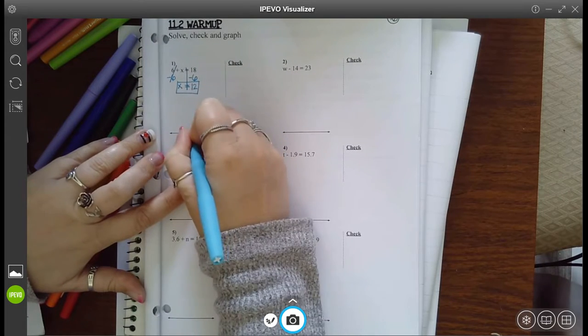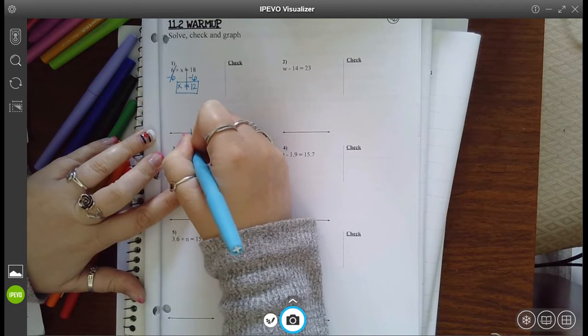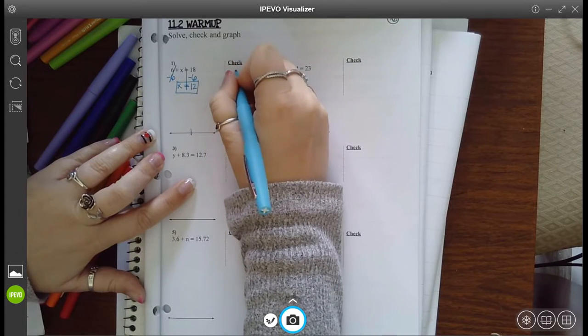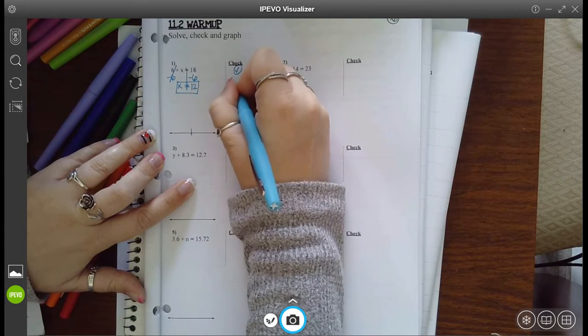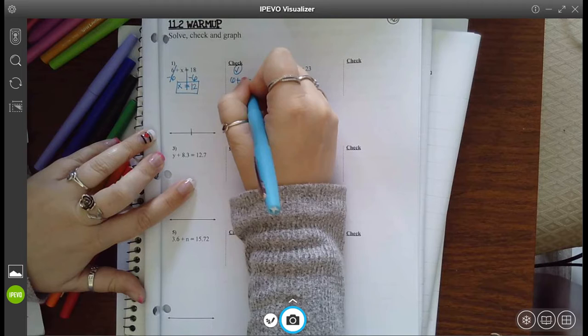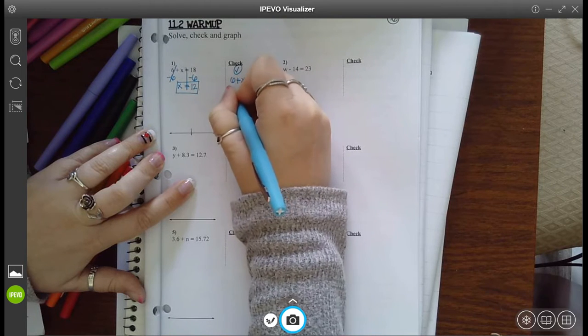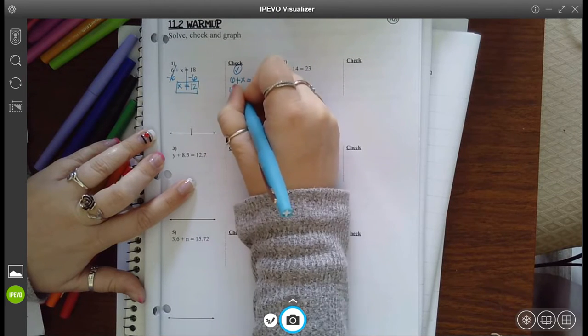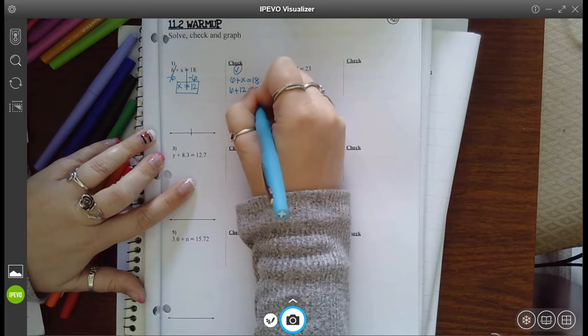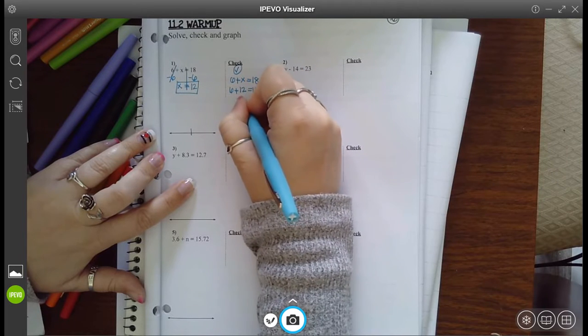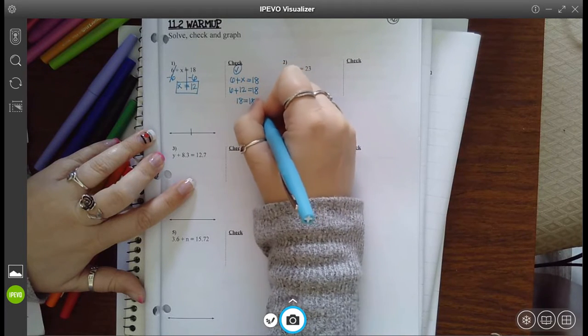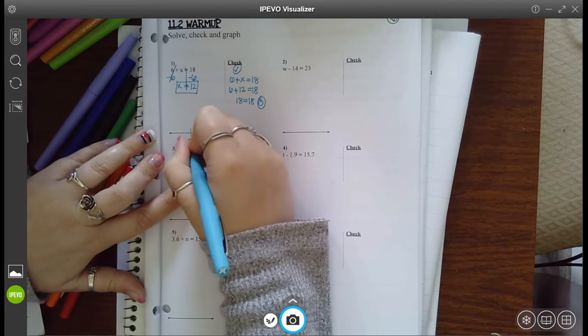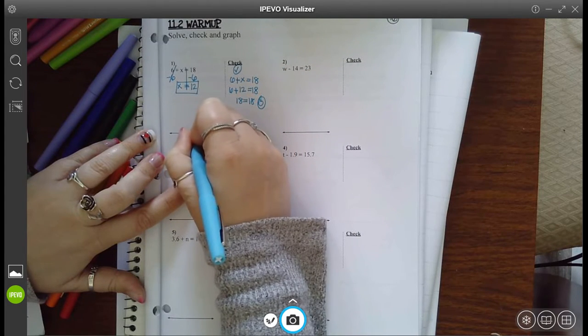Okay, before I draw in that 12 is for sure the correct answer on my graph, let's check it. So you have 6 plus x equals 18 and I'm going to replace x with what I think it is, a 12. And 6 plus 12 is 18. 18 is 18. That's a true statement, so I know for sure that 12 is indeed the correct answer.